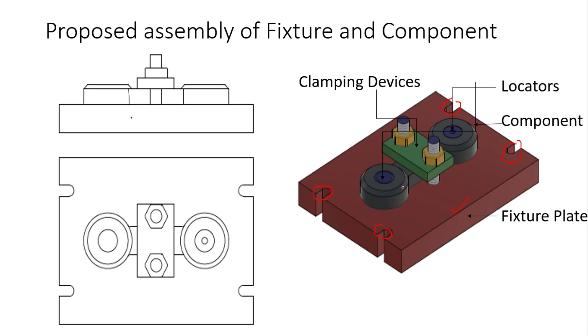Then we can assemble locators in this fixture plate. Two studs on both sides of the component can be located. This locator will align through these two holes that are already in the component.